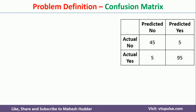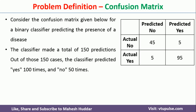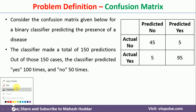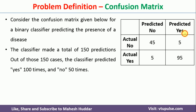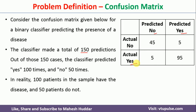In this case, we have been given a confusion matrix with 150 predictions. Out of 150 predictions, there are 100 examples predicted as yes and 50 examples predicted as no. And out of 150 examples, there are totally 50 examples of type no and 100 examples of type yes. Given this data, we need to find the different performance metrics of this particular classifier.